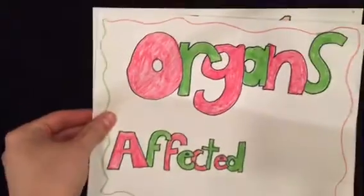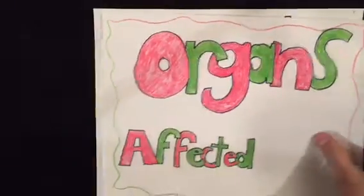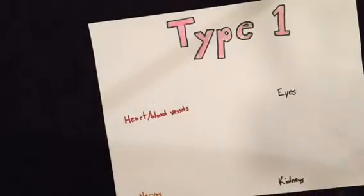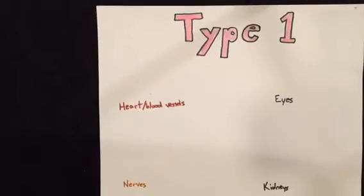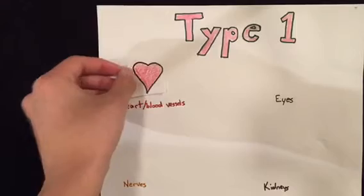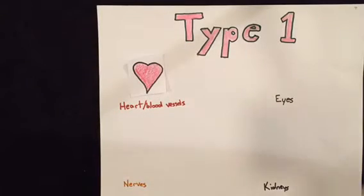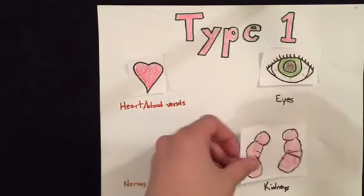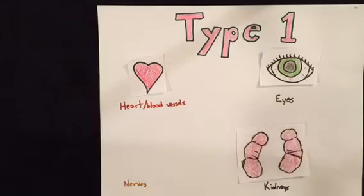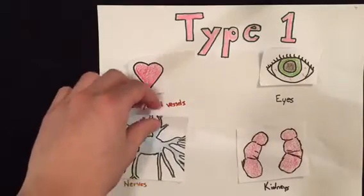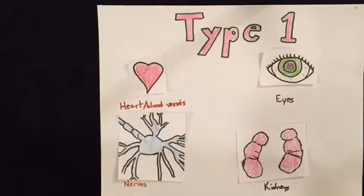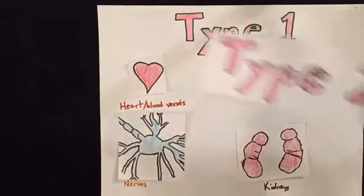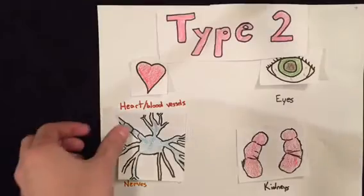Diabetes affects several organs. For type 1 diabetes, it affects the heart and blood vessels, the eyes, the kidneys, and the nerves. It also affects the same organs for type 2 diabetes.